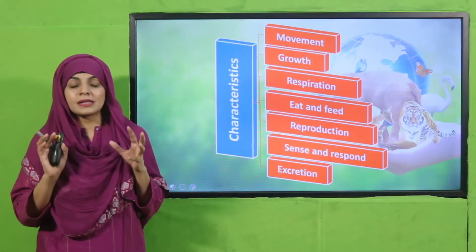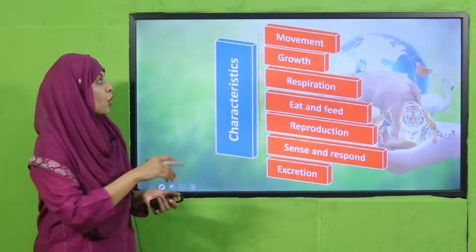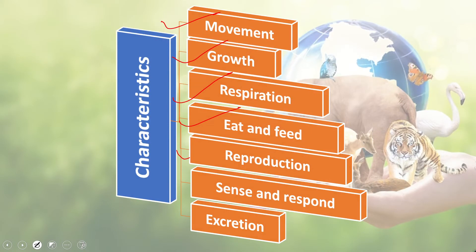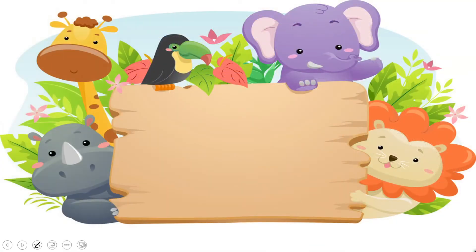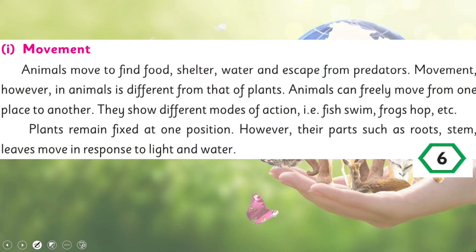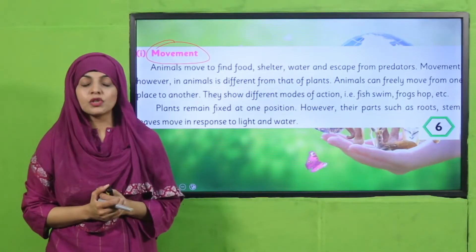Let's quickly revise the characteristics of animals and plants: movement, growth, respiration, eat and feed, reproduction, sense and respond, and excretion. Today we will discuss movement and growth. Please open your science books to page number six — Movement. I hope everybody has opened the page.